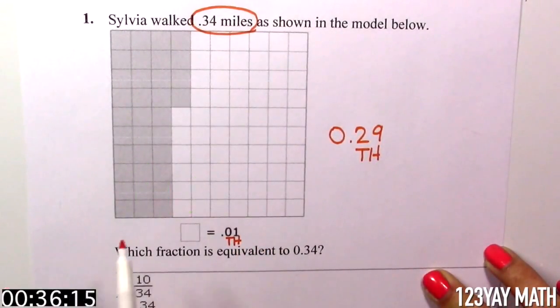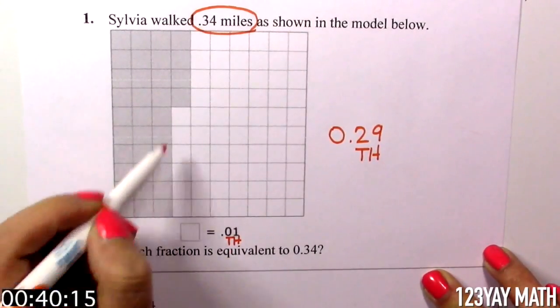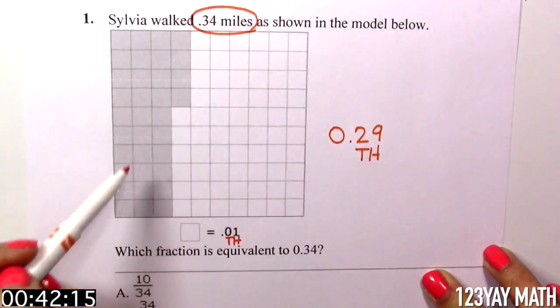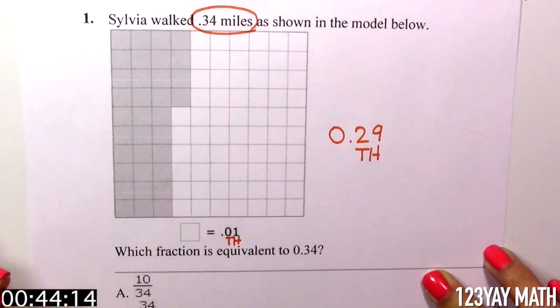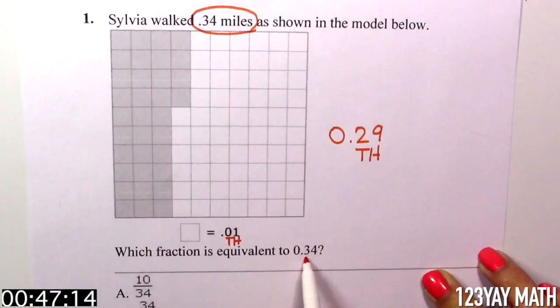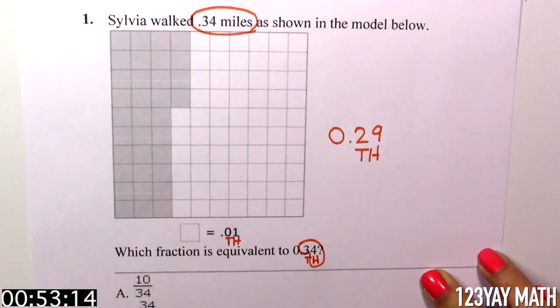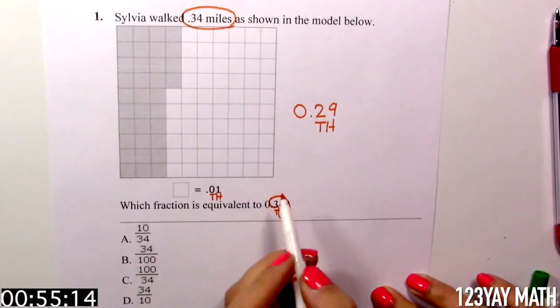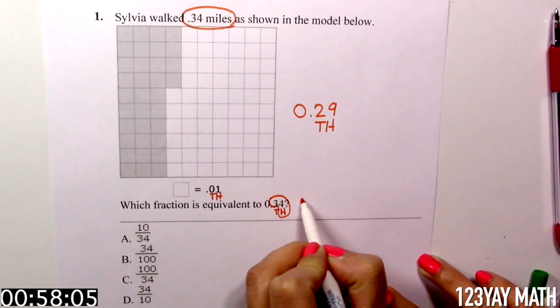How do we write that in decimal? 0.34, or 34 hundredths. And we have to show it as a fraction. How do we write this down? 34...